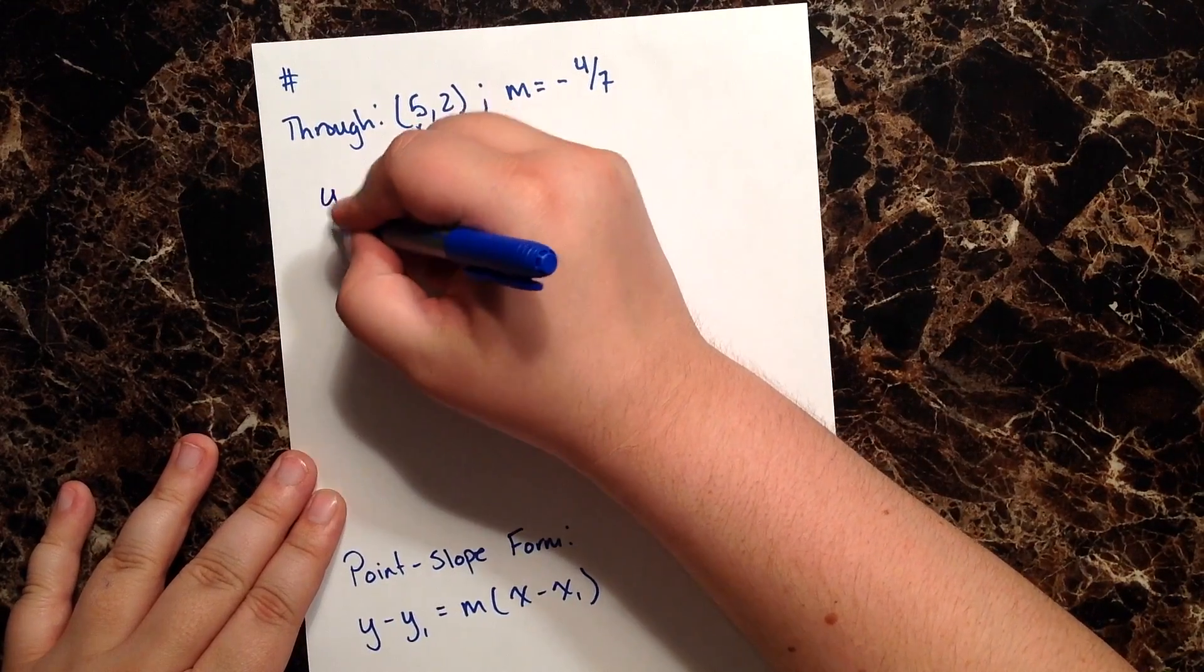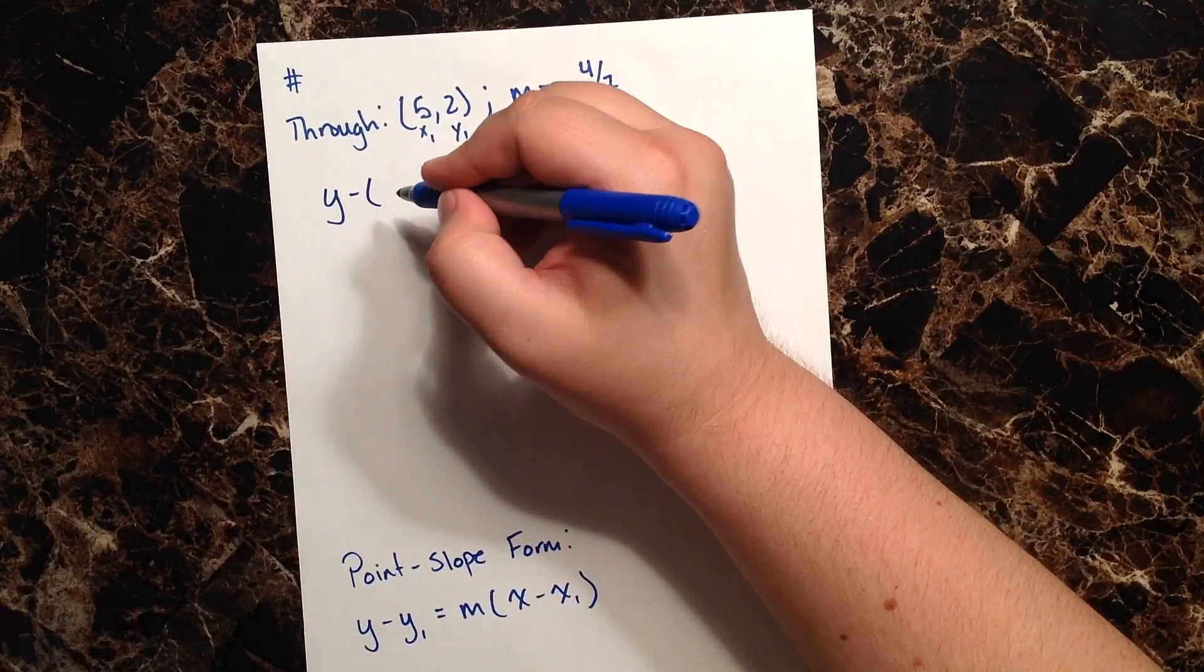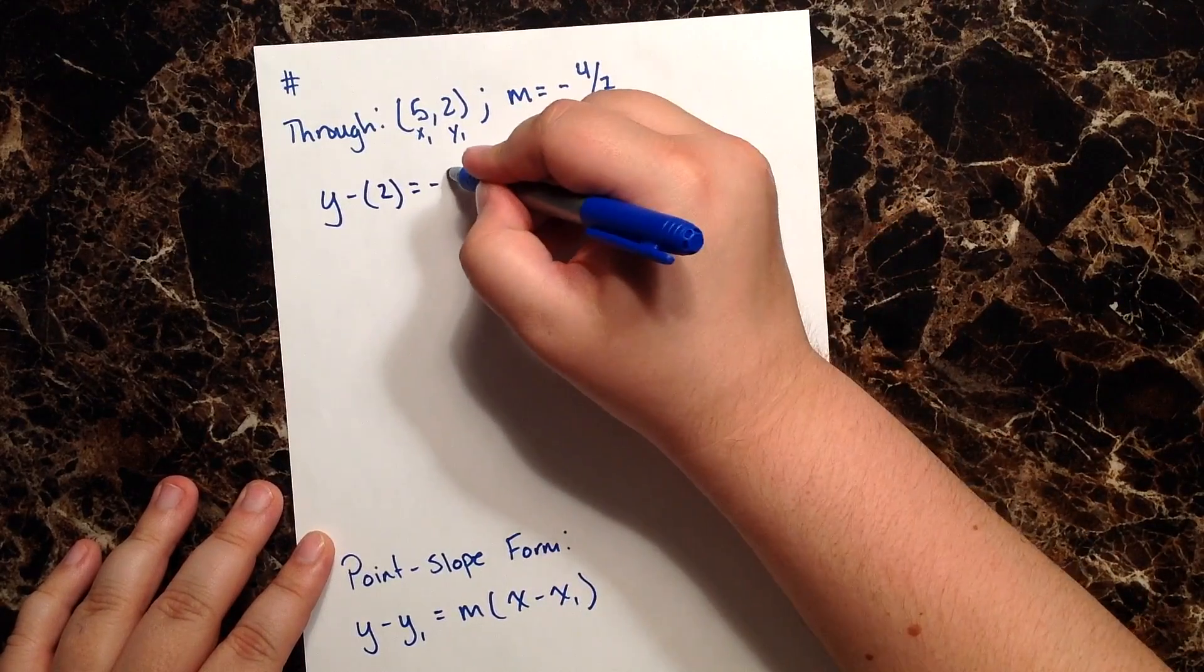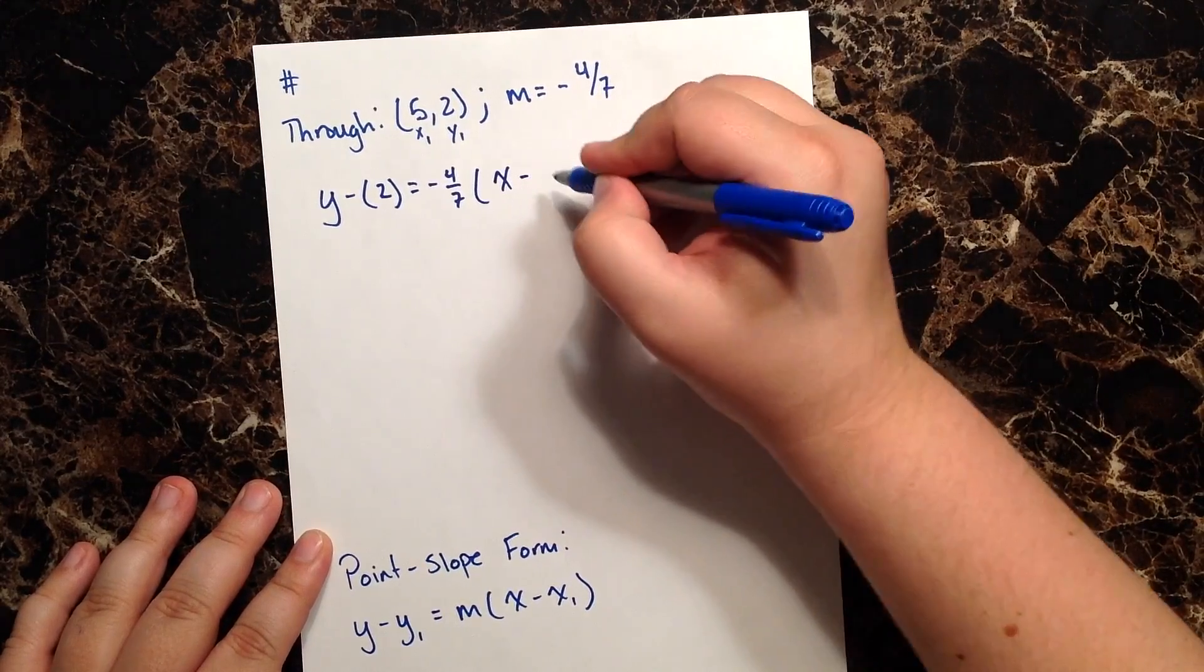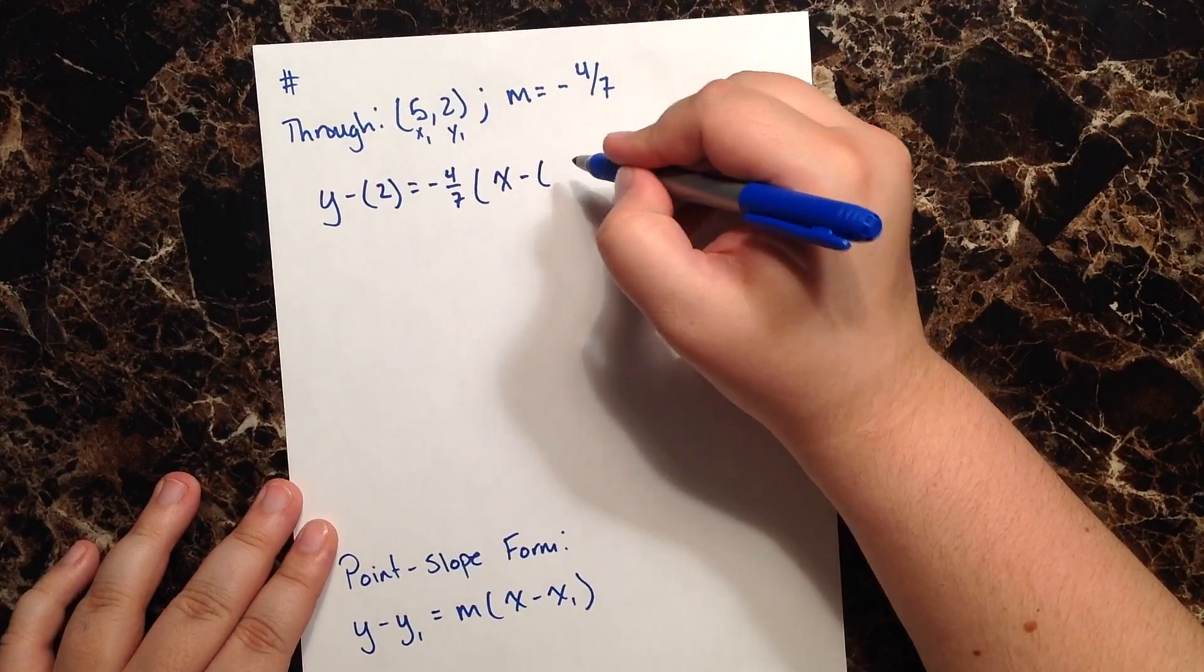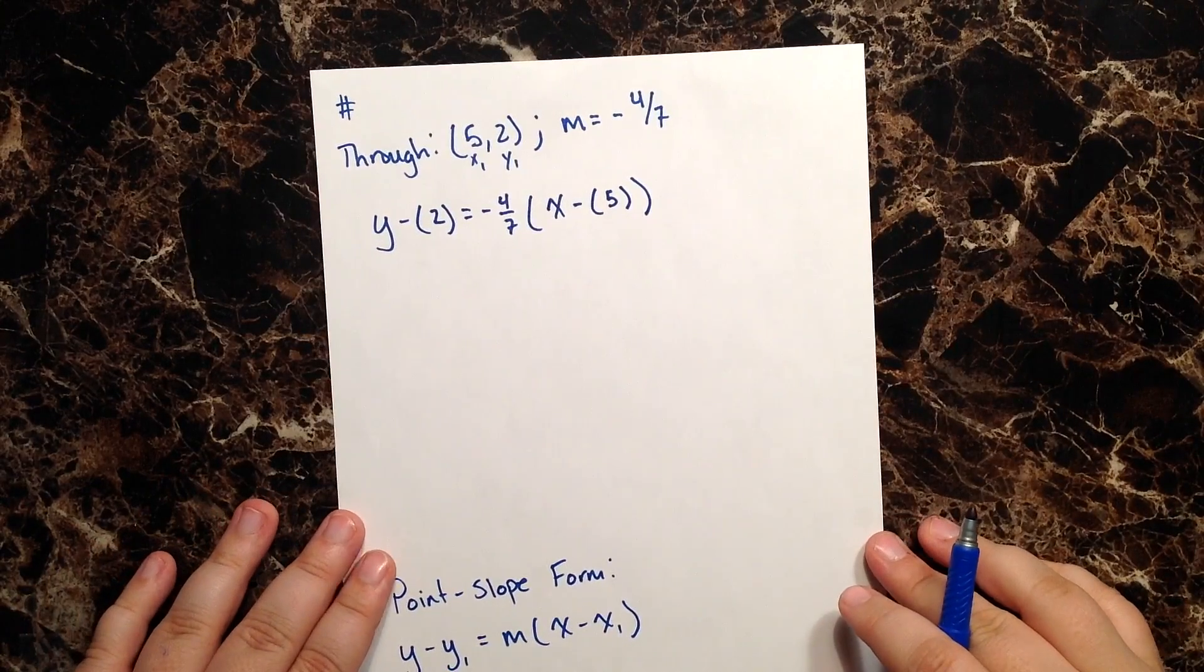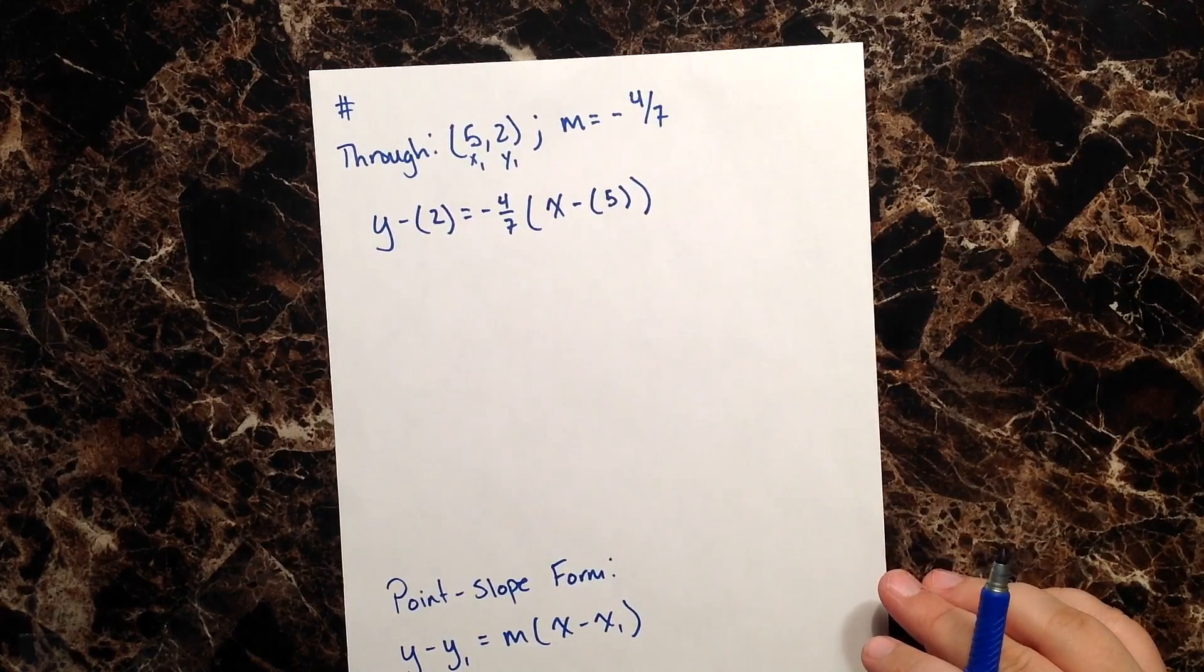So we have y minus y₁ equals—let's plug in our slope—negative four over seven times quantity x minus x₁, but we'll go ahead and plug in our x value. And that is our equation with just the information plugged in.